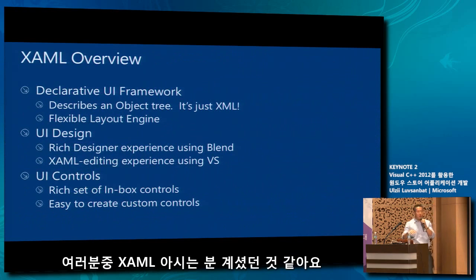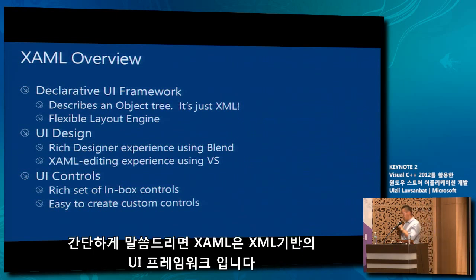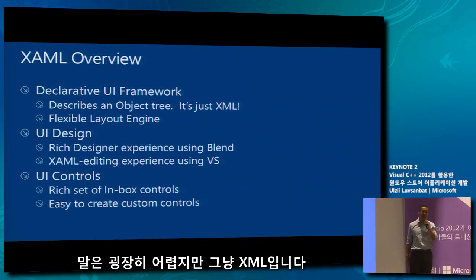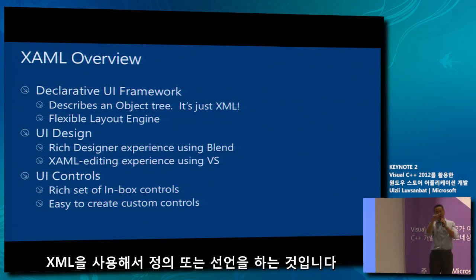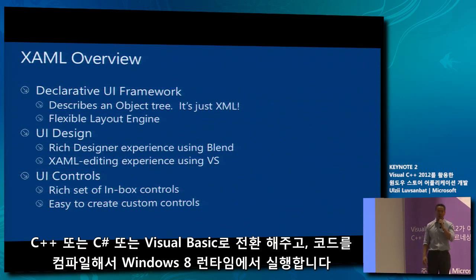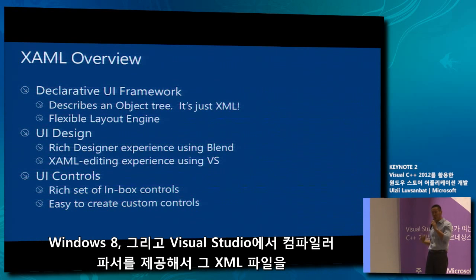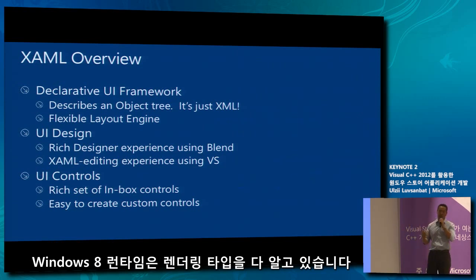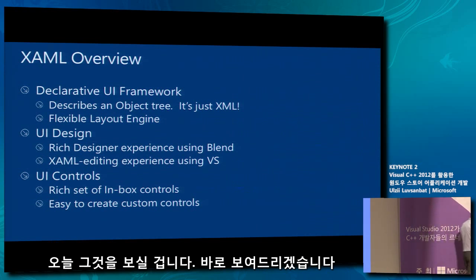XAML is an XML-based declarative UI framework. Essentially it's just XML — using XML you declare the layout of your UI components. That's all you're doing. Windows 8 and Visual Studio provide a compiler parser that converts that XML file into C++, C#, or VB, compiles that code, and runs it against the Windows 8 runtime. The Windows 8 runtime knows how to render these types. And that is exactly what we will see in our demo right now.